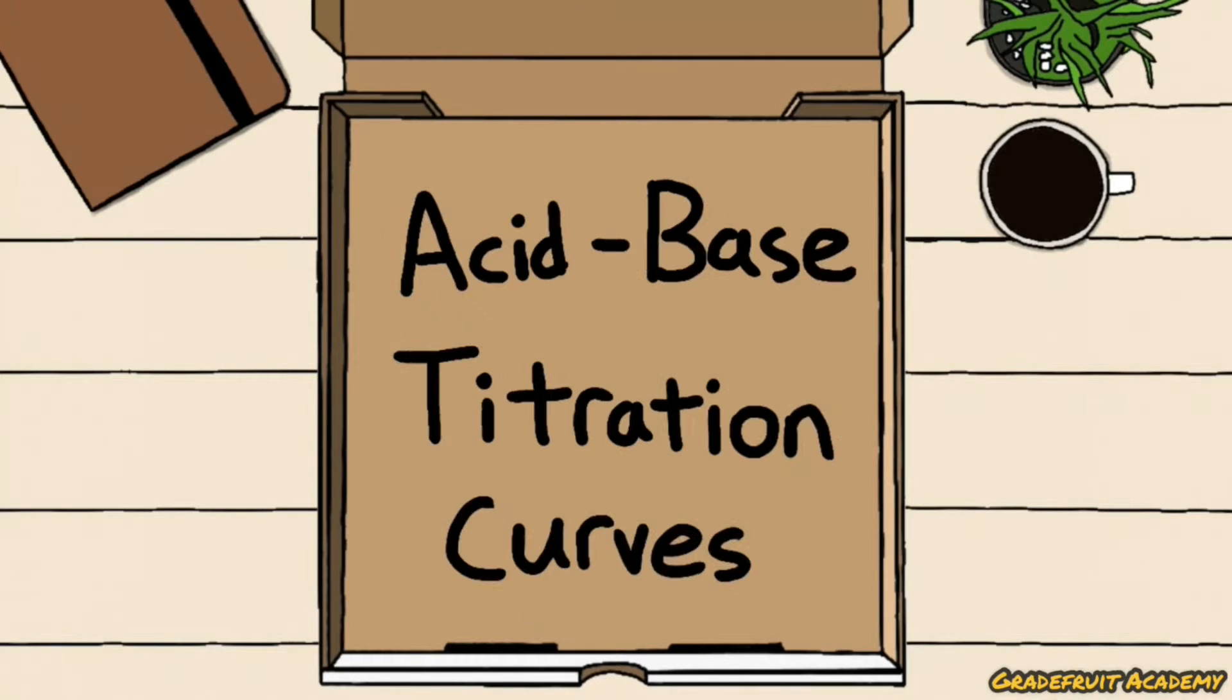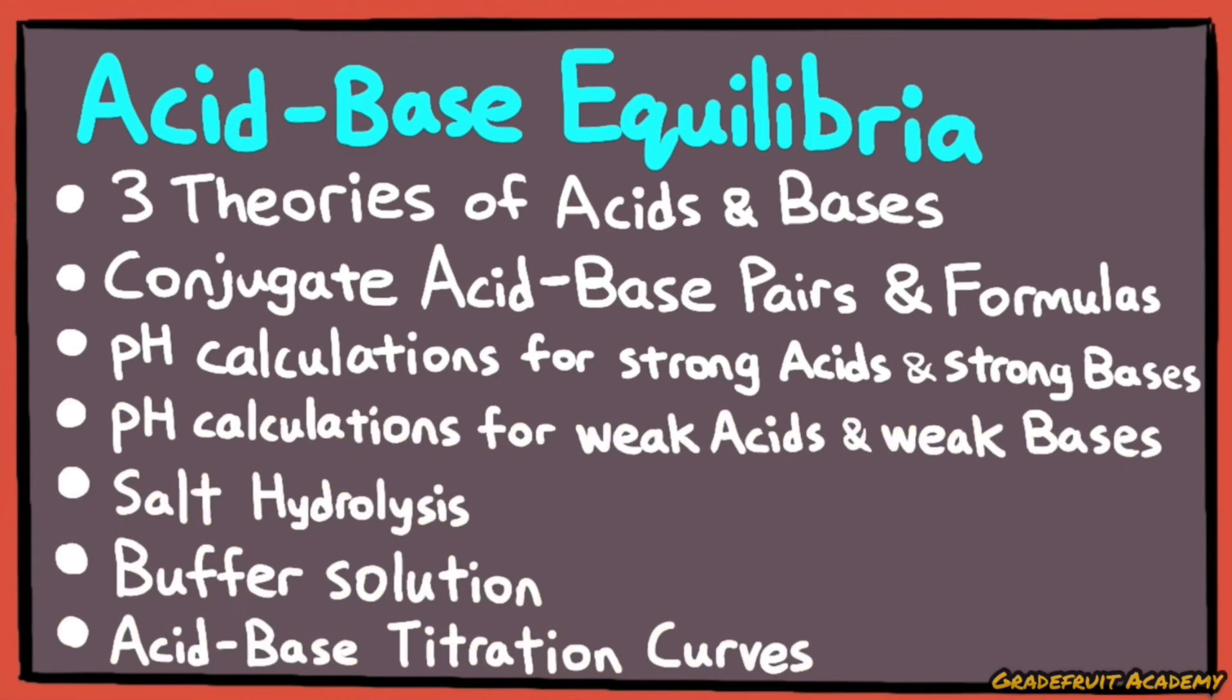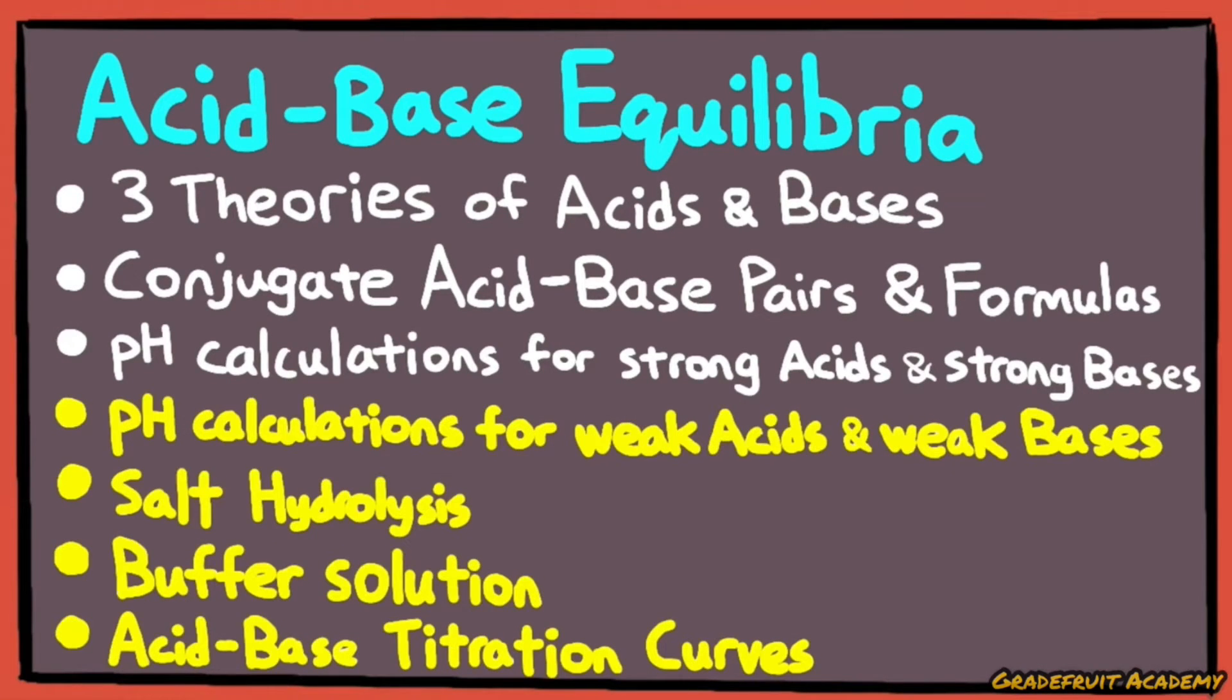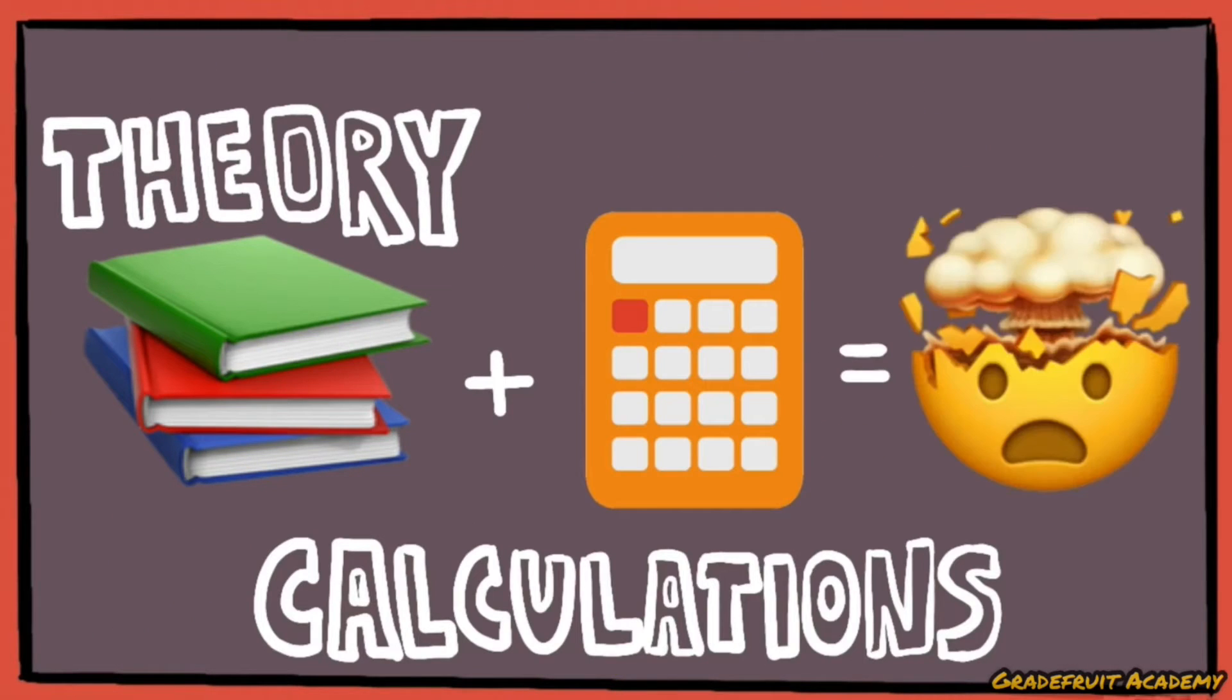buffer solutions, and lastly, acid-base titration curves. The more important parts that the A-levels will focus on are these four big sections. And there is a combination of theory and lots of calculations that we need to master.